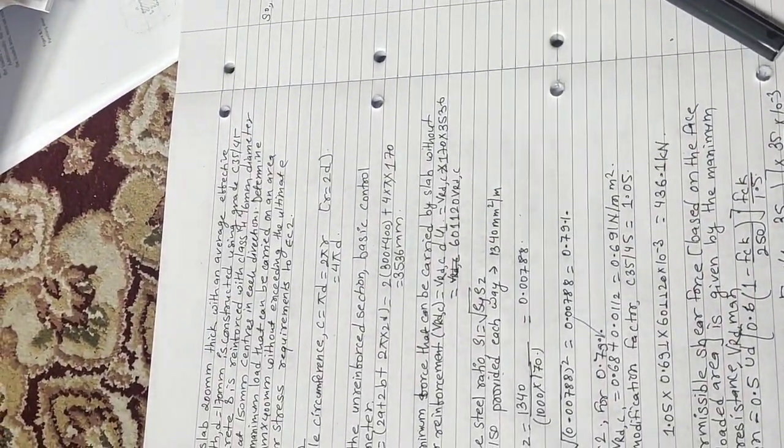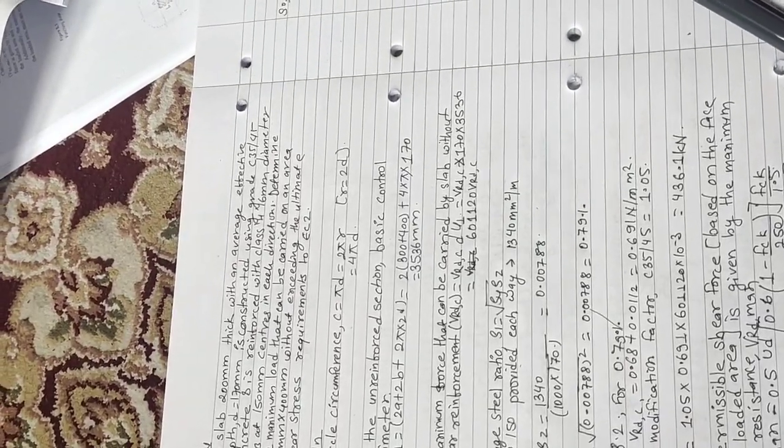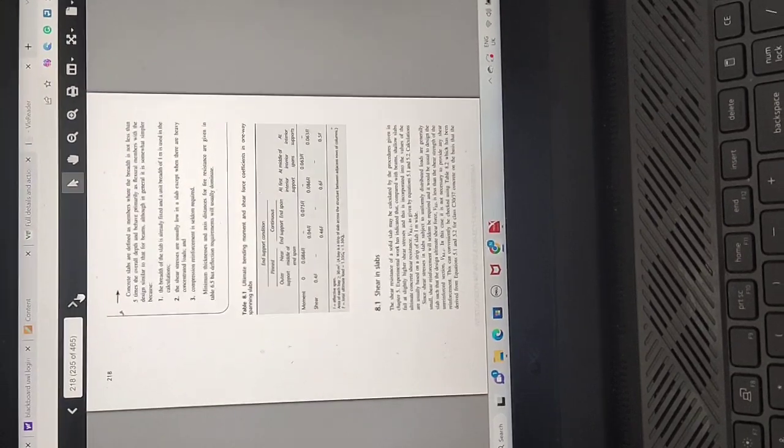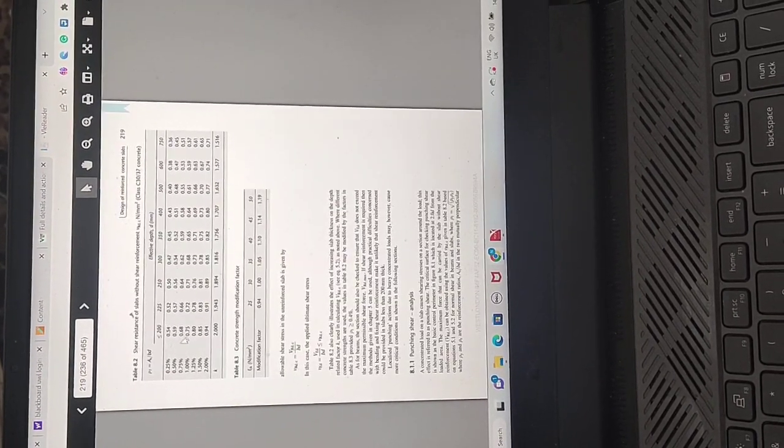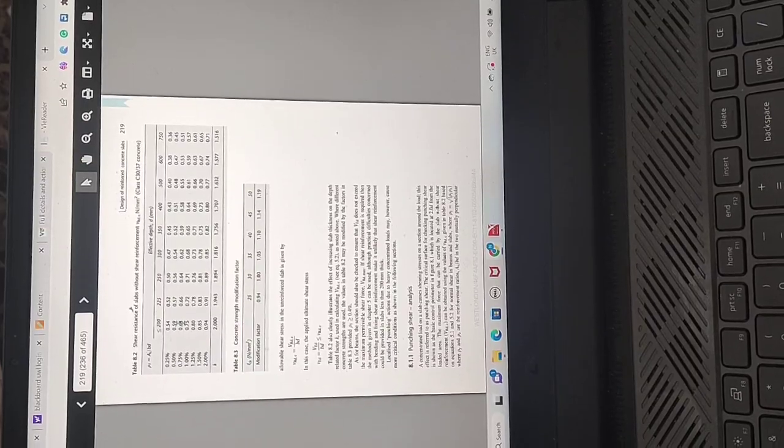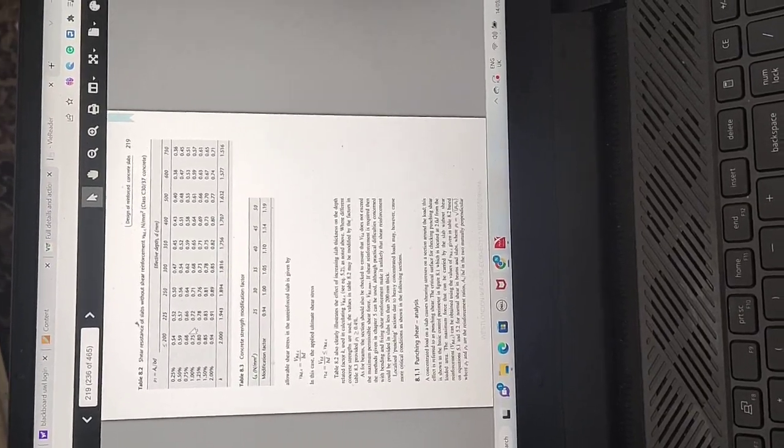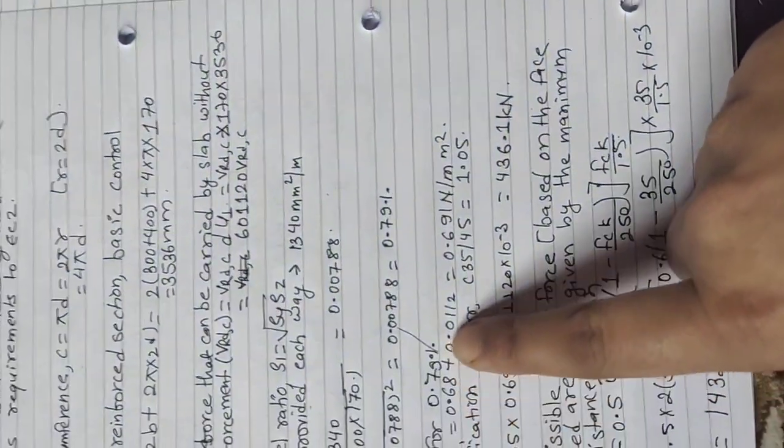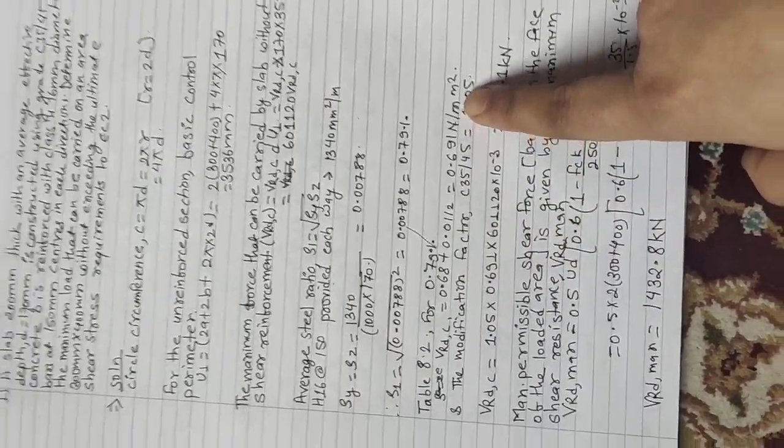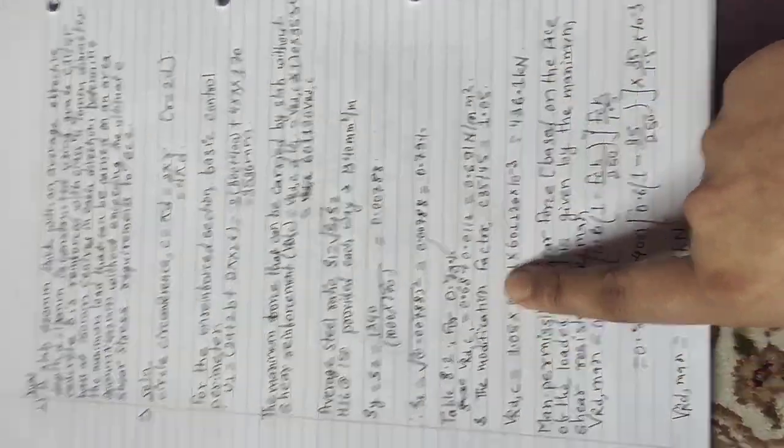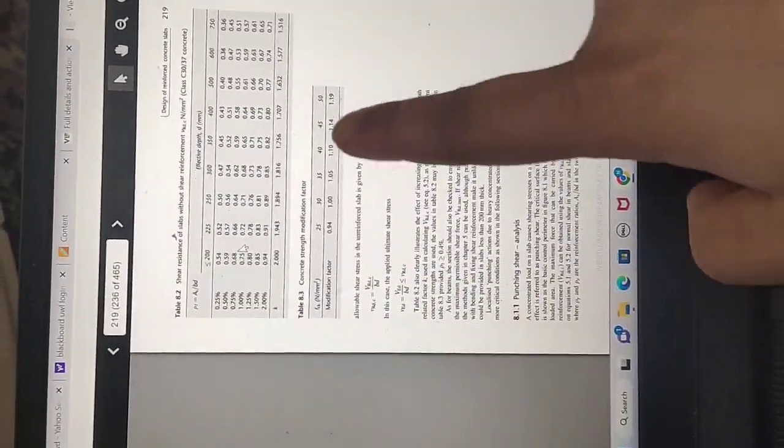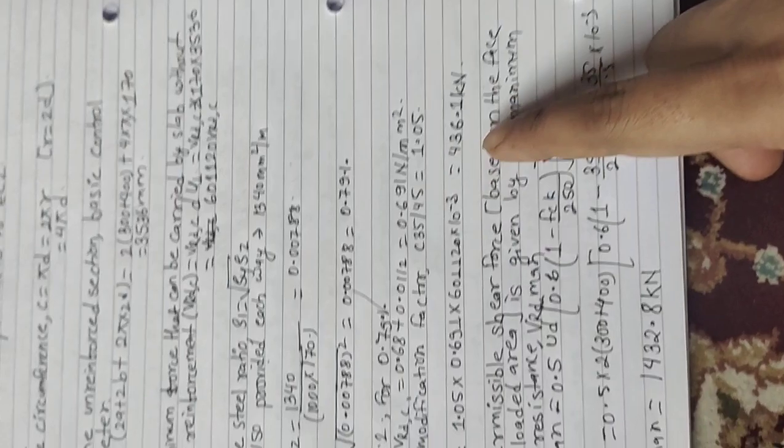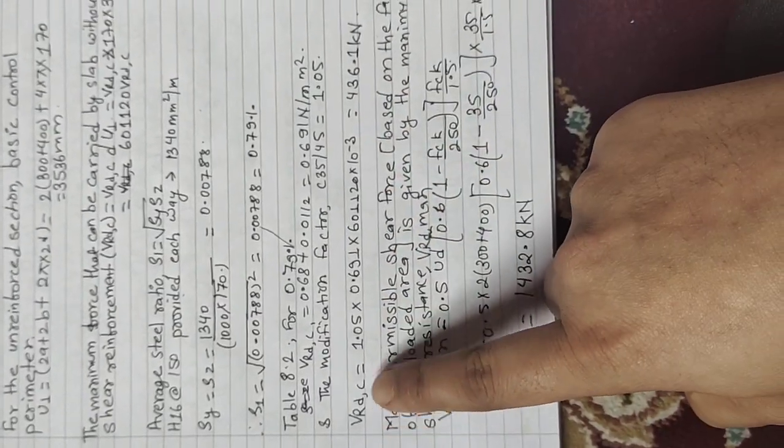For P_Rdc we will go to the graph. In this graph, for δ = 0.79, we will use d = 200, it is 0.60 plus something, approximately 0.61. But the modification factor for C40 is 1.05, and we calculate the P_Rdc.